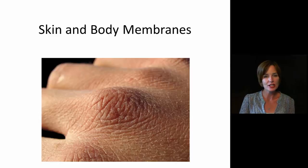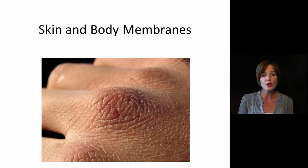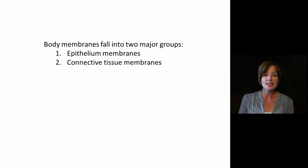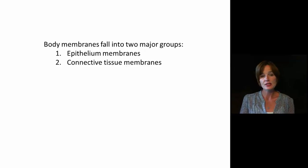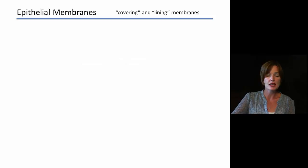In this lesson, we're going to take a look at the skin, which is the integumentary system, and then we're also going to look at body membranes. We have two basic types of body membranes found inside humans: epithelial membranes and connective tissue membranes. We're going to look first at the epithelial membranes and talk about them.